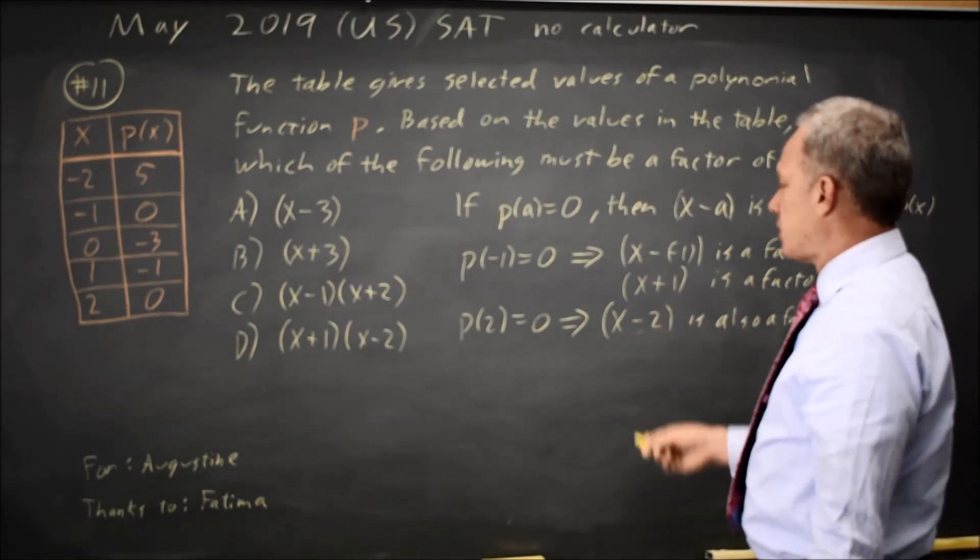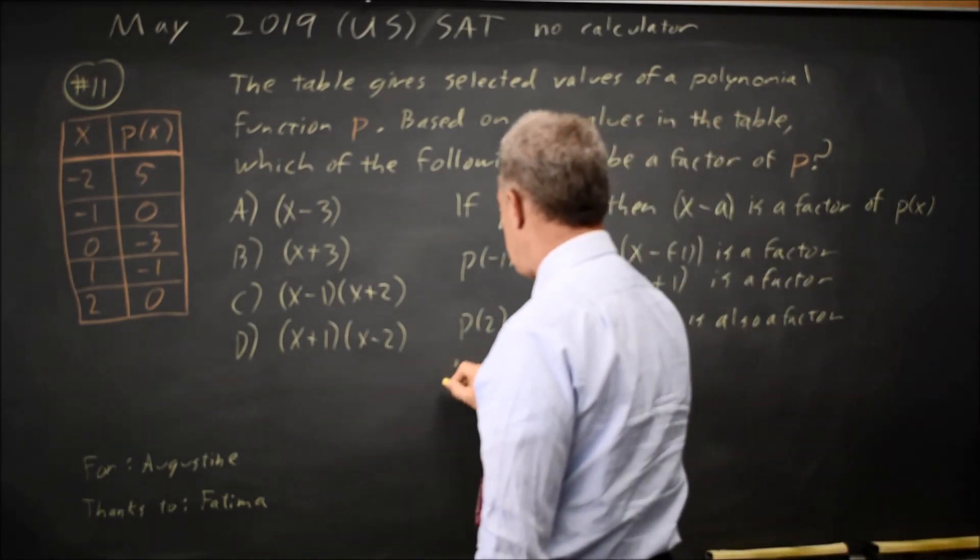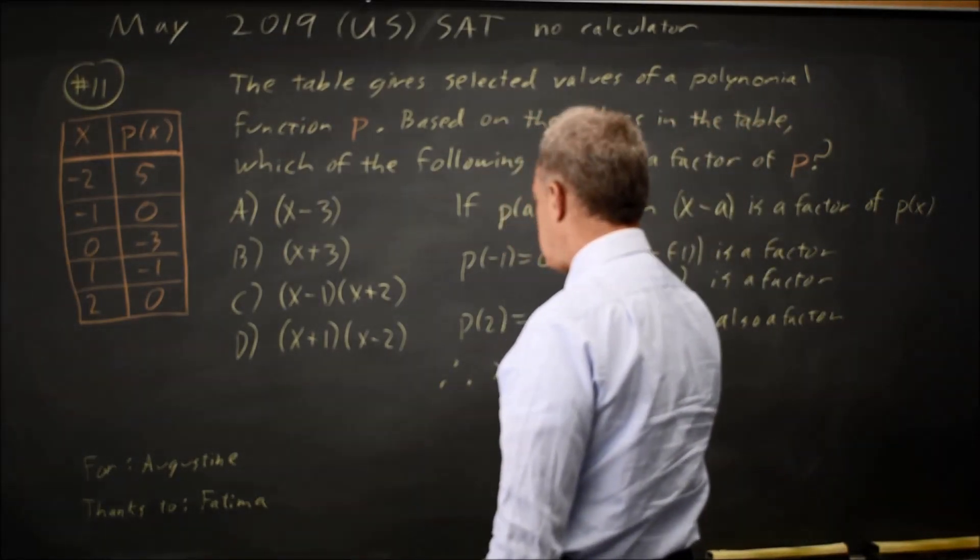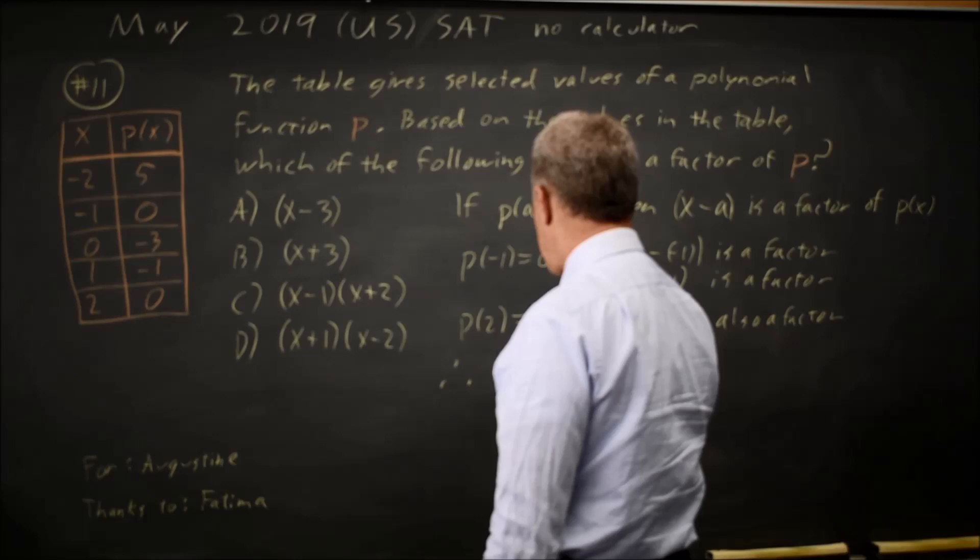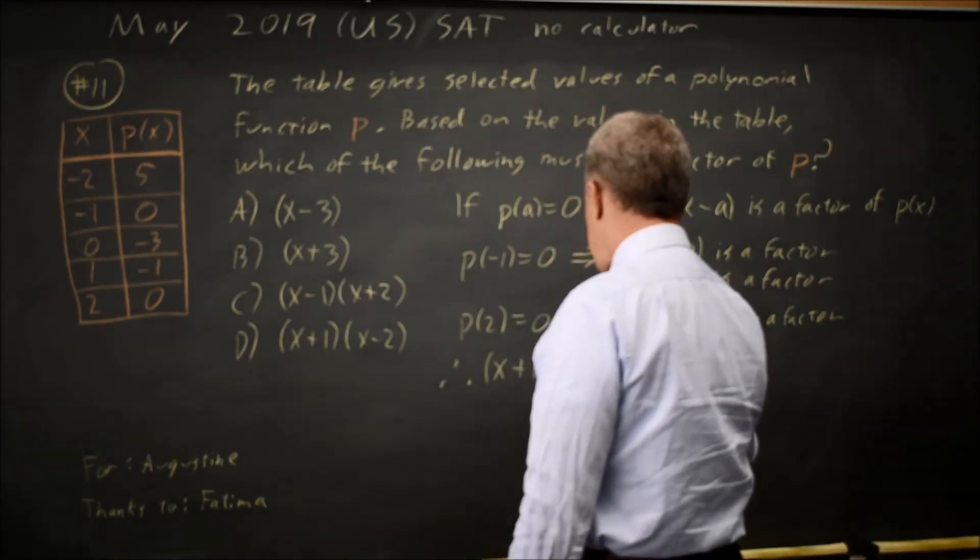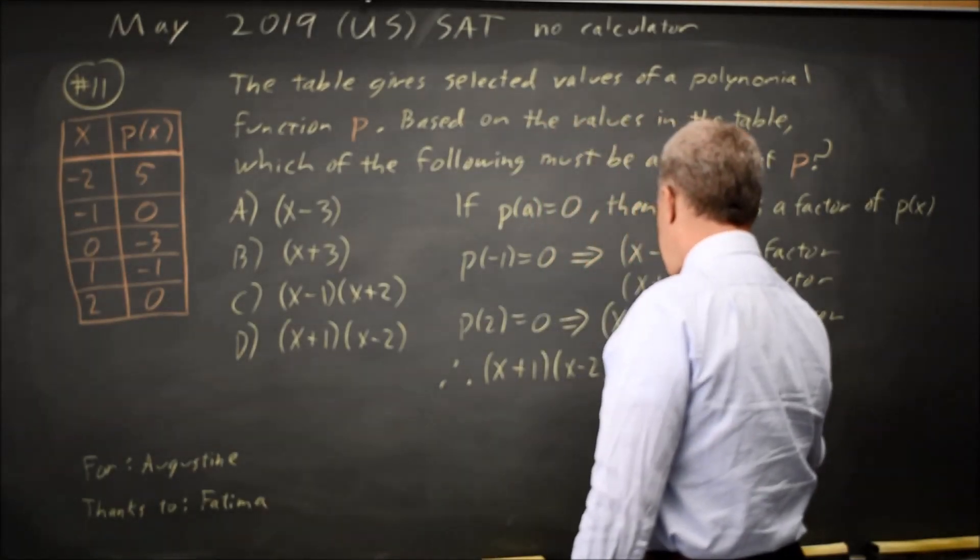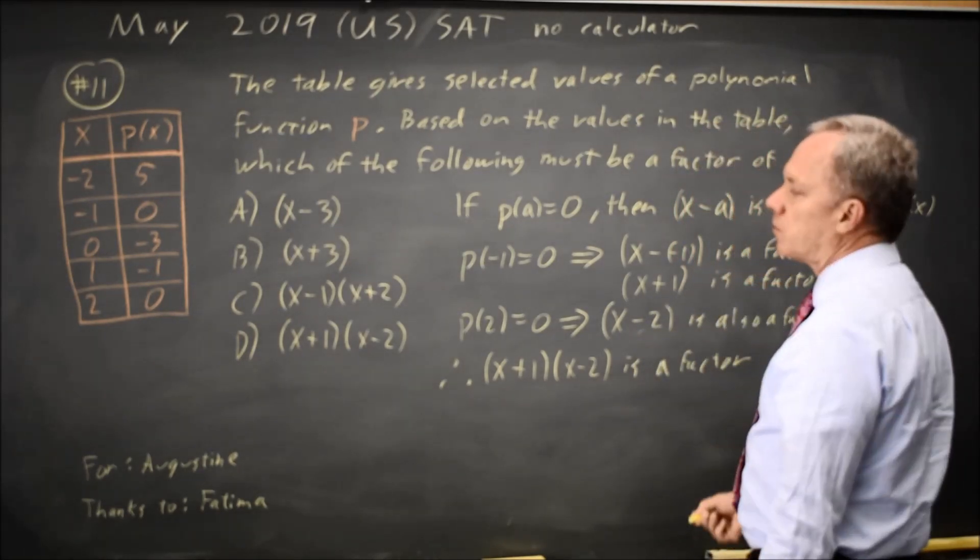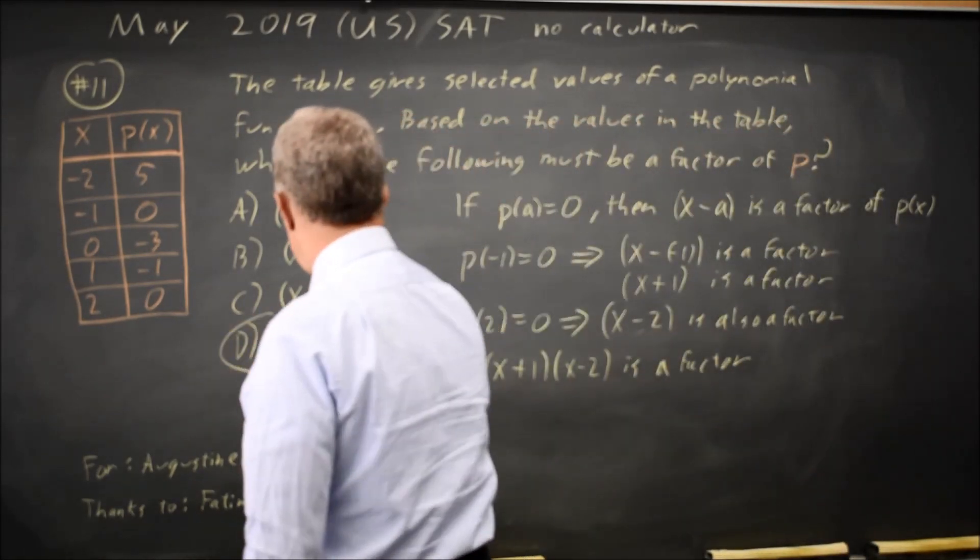Since X plus 1 and X minus 2 are both factors, the product, X plus 1 times X minus 2, is a factor. And that would be choice D.